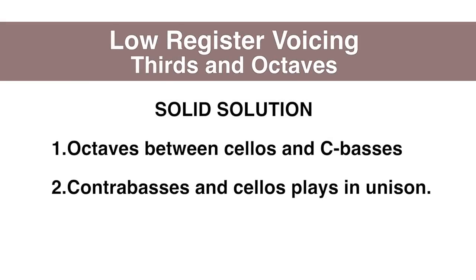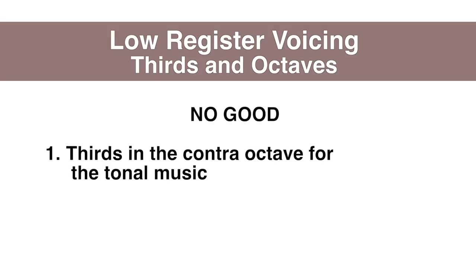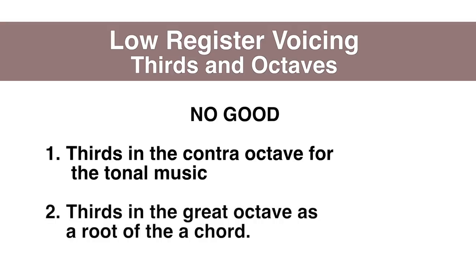Let's sum up. Octaves between cellos and contrabasses — John Williams style — would be the solid go-to solution. Contrabasses and cellos playing in unison is also good, but contrabasses sound a bit harsh in the cello range. Thirds in the great octave can be very beautiful, but you need to empty the mid-frequency range — Tchaikovsky Symphony No. 6 style. Or in solo mode, it's always great and the ear can hear those octave notes pretty well. For low frequency extended techniques: open your mind and break all orchestration rules — bad and weird sound is what you're looking for. Thirds in the contra octave are no good for nice tonal music, and if you want to build a chord, do not use thirds in the lower register.